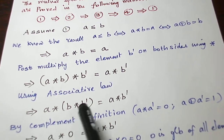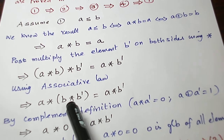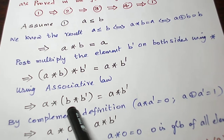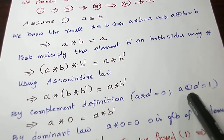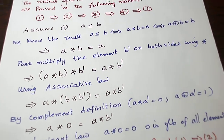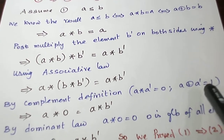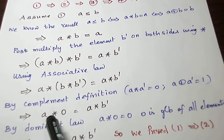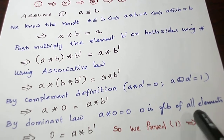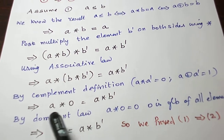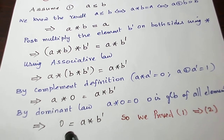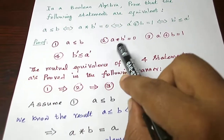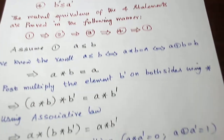So A star B star B dash equals A star B dash. Applying the associative law, we change the bracket to A star (B star B dash). Now B star B dash — applying the definition of complement — equals 0. So A star 0 equals A star B dash, which gives 0 equal to A star B dash. So we have proved 1 implies 2.